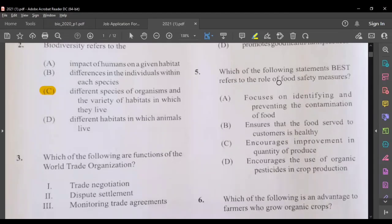Which of the following statement best refers to the role of food safety measures? A focuses on identifying and preventing contamination of food. B ensure that food is served to customers and is healthy. C encourage improvement in quality of produce and D encourage the use of organic pesticides. The most suitable answer is A, focusing on identifying and preventing contamination of food.